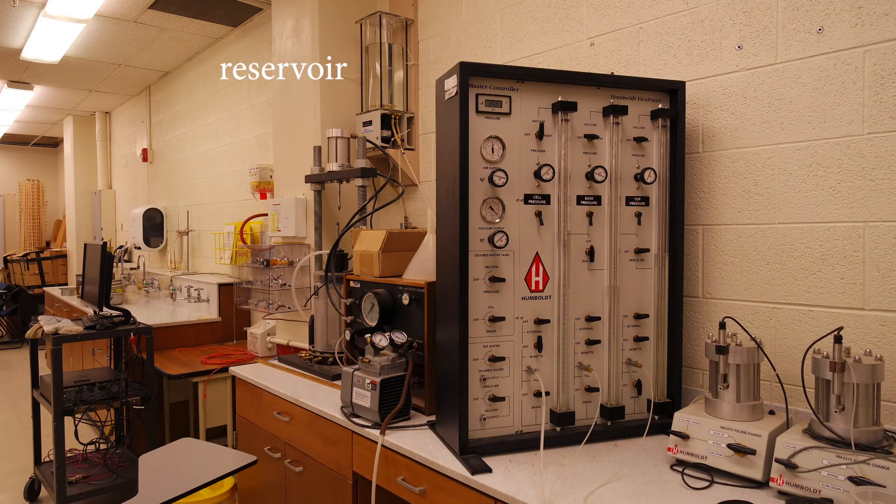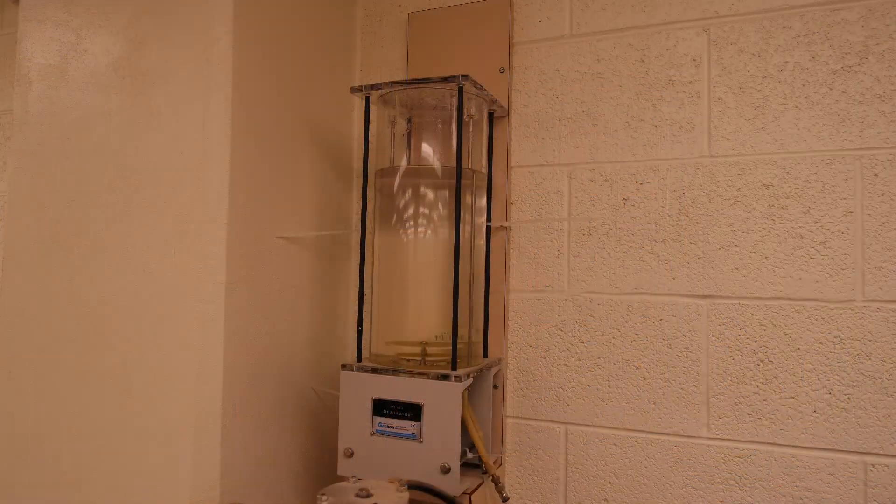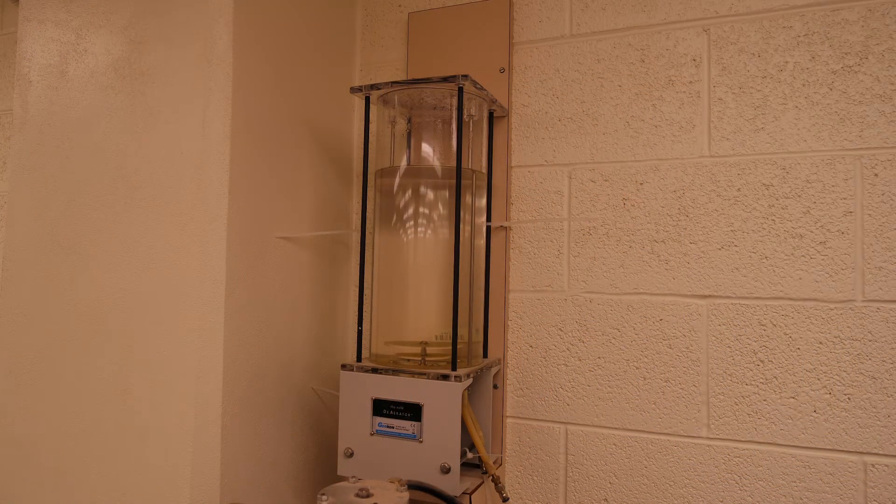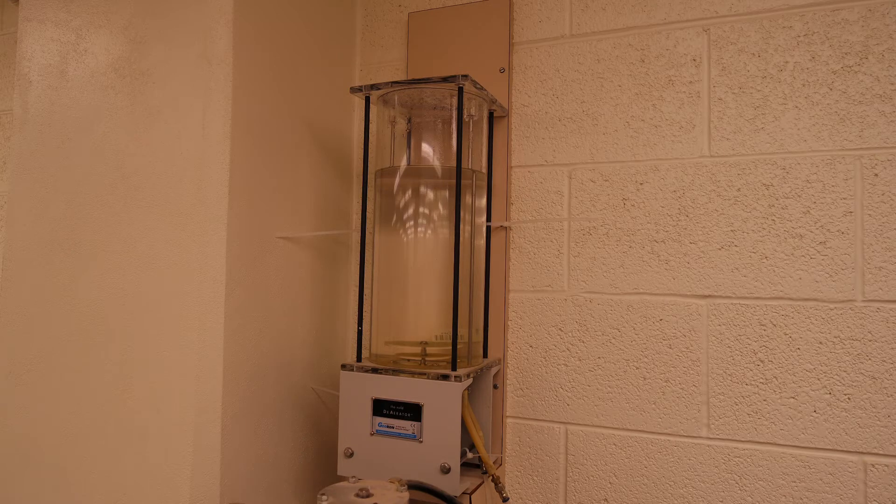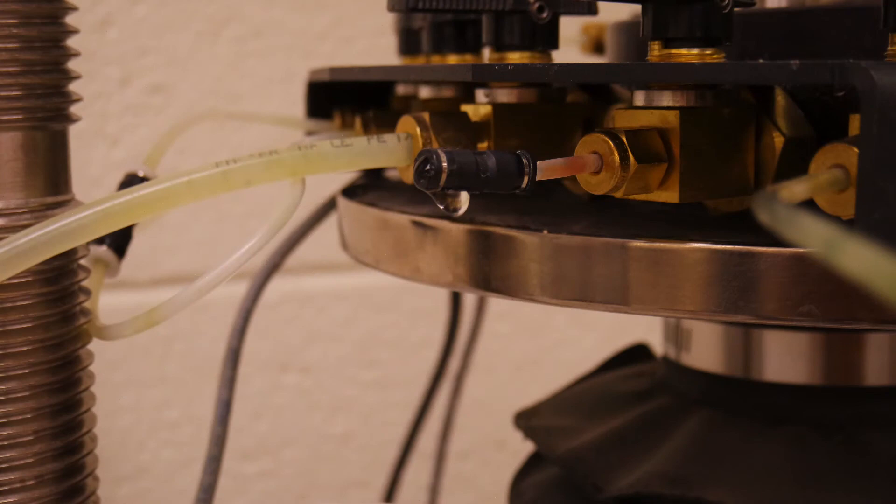Next, we'll be running a constant head test. This type of test is typically run on granular soils. I will change over a couple of valves and now we are flowing water from that reservoir. This is considered a constant head because of the size of the reservoir and the little amount of water there will be flowing from it for our test.